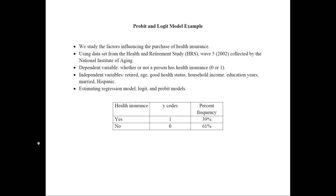This is the example we will consider here. We will be using a data set from the Health and Retirement Study Wave 5 from 2002, collected by the National Institute of Aging, and we will study the factors influencing the purchase of health insurance. Our dependent variable would be equal to whether or not a person has health insurance — 0 if they don't and 1 if they do.